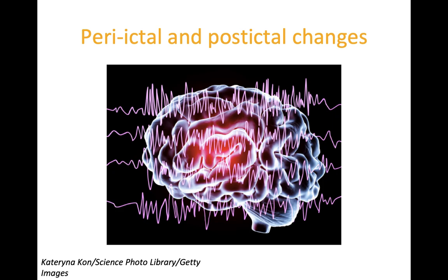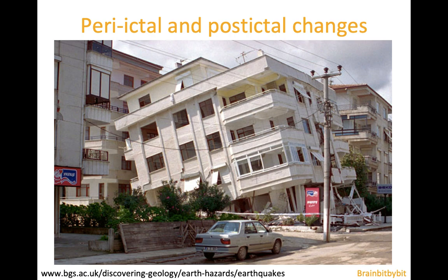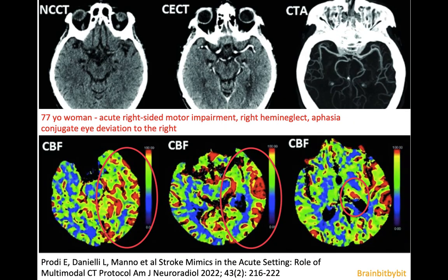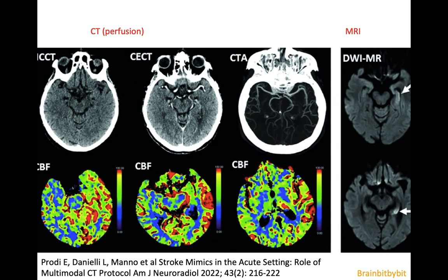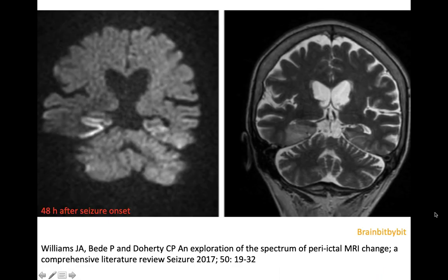I'm going to show peri-ictal and post-ictal changes. A seizure surely shakes things up, and you cannot expect imaging in the post-ictal phase to be normal. We concluded the previous brain bit by bit with a case of a 77-year-old woman with seizures originating from her left hemisphere with hyperperfusion on CT. She also had an MRI in the acute phase demonstrating diffusion abnormalities in her left hippocampus. Edema and diffusion abnormalities is something we often see after a seizure, especially in the hippocampus and mesial temporal lobe.